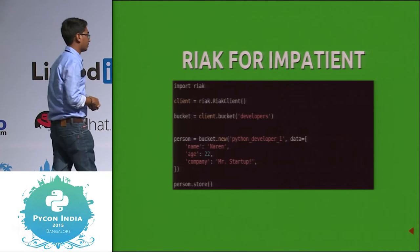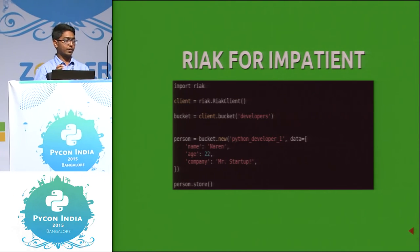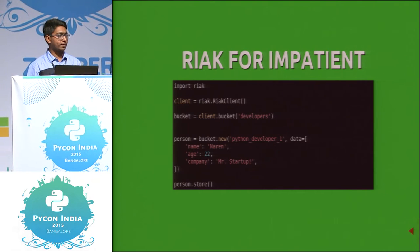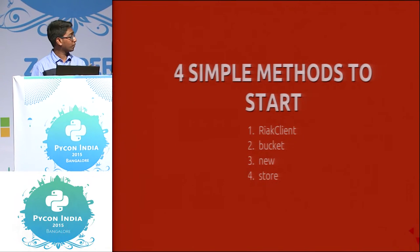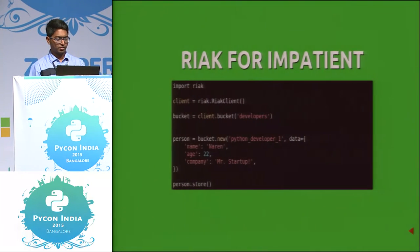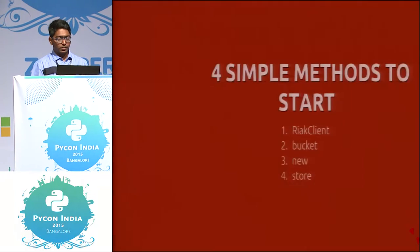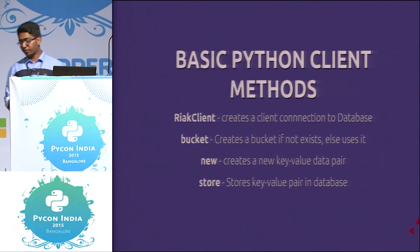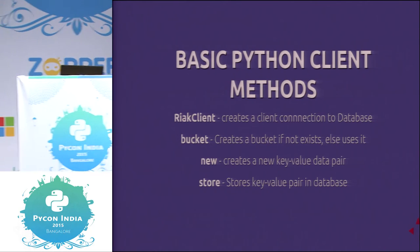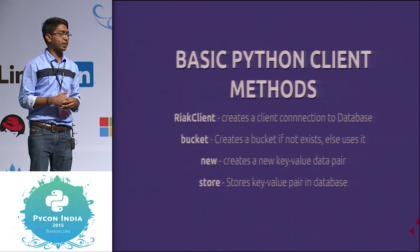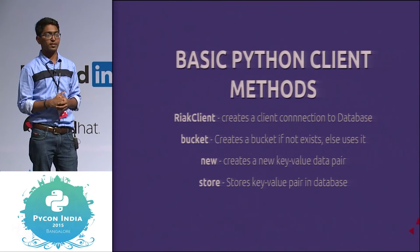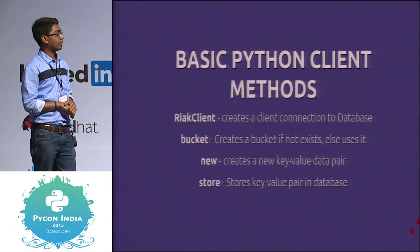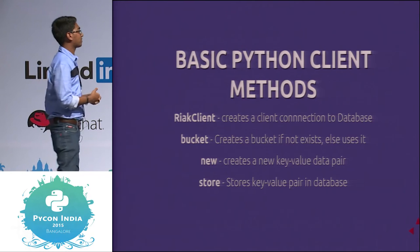These are the methods to insert data using Riak client: bucket, new, and store. But you might be wondering — where is the clustering? Where are the nodes? Where are the scalability things discussed earlier? You're showing just one node and inserting data into it. Where are the nodes and where is the cluster?